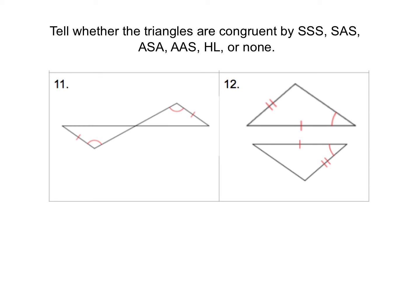Number 11 also has a pair of vertical angles that we can add to our diagram right here, and this time now, I have two pairs of angles and I have a side. Notice how the side here, though, is not the side that connects the two angles. It's a non-included side, making this an example of triangles that are congruent by angle-angle-side.